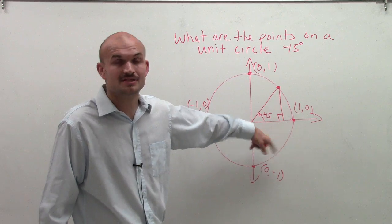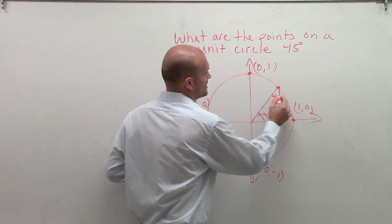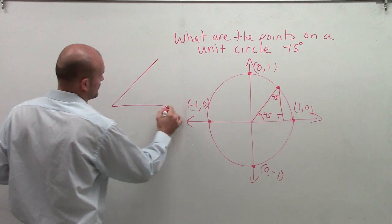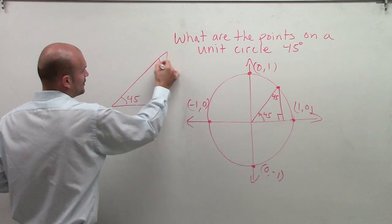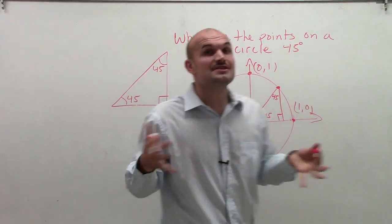Well, 45 plus 90 is 135. Therefore, this angle also has to be 45 degrees. So I've created a 45-45-90 triangle. If you remember, 45-45-90 triangles have certain characteristics.